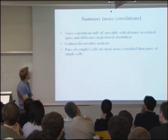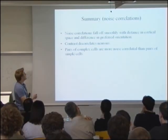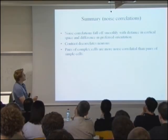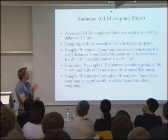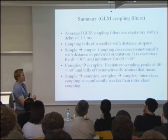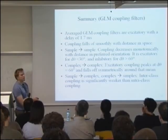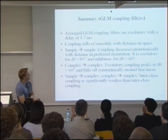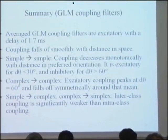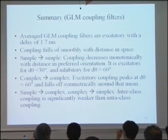Summary: Noise correlations follow smoothly with distance in space and preferred orientation. Contrast decorrelates neurons, as expected. Pairs of complex cells are more noise-correlated than pairs of simple cells. The average GLM coupling filters show a delay of 1.7 milliseconds; coupling falls off smoothly in space. For simple-simple cells, coupling decreases monotonically with distance in preferred orientation — excitatory for similarly tuned neurons, inhibitory for very dissimilarly tuned neurons. For complex-complex cells, excitatory coupling peaks at 60 degrees difference in preferred orientation, falling off symmetrically. Inter-class coupling is significantly weaker than intra-class coupling.